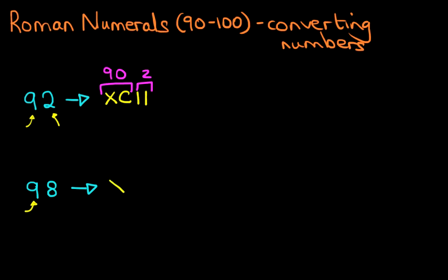How do we write 90? It is XC. That is 90. And now we write down the 8. That is 5, 6, 7, 8.